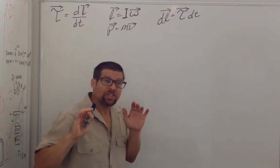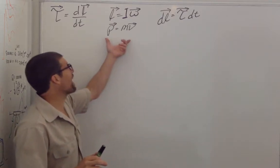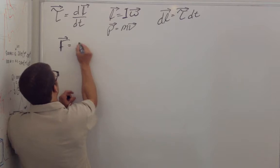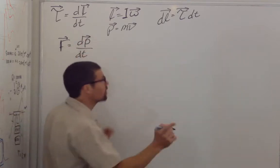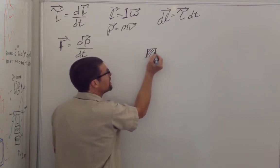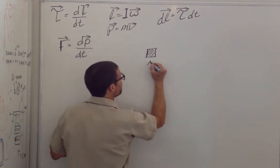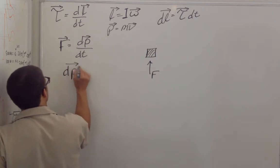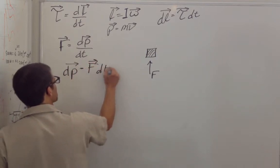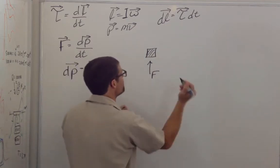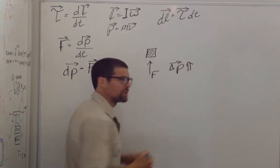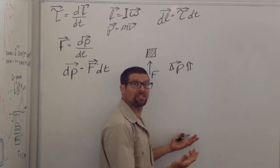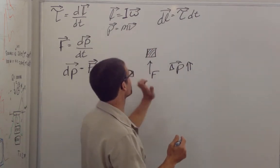Before we do that, let's look at why this should make sense by examining the linear analog, because it's more intuitive. We know that force is equal to the rate of change of linear momentum. If I'm sitting here as a mass m-naught and you apply a force to me, you give me an impulse equal to force times delta T. So you give me some impulse delta P in this direction — if you push me in this direction, I move in that direction, and my velocity will be in that direction.